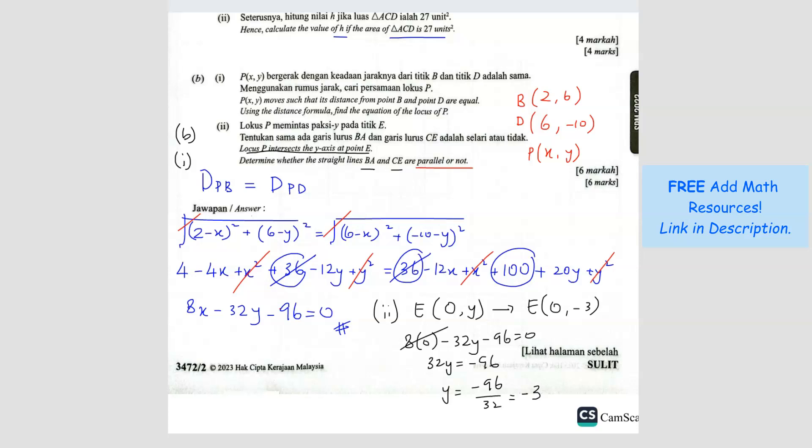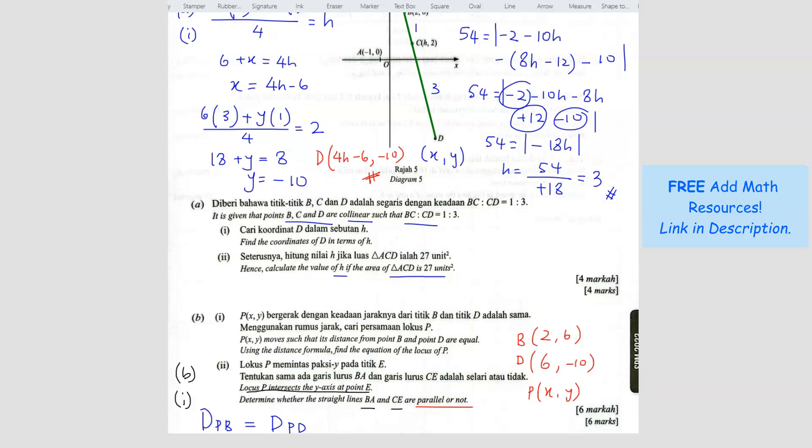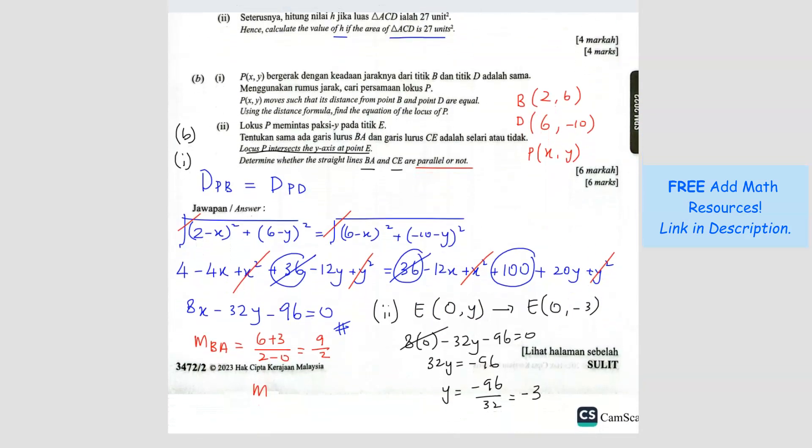Since we are looking for whether it's parallel or not, that means we want to find the gradient. So the gradient, the first one is between B and A. So B and A, B is 2, 6. So Y2 minus Y1 over X2 minus X1. So 6 minus negative 3, so plus 3, divided by 2 minus 0. So you get 6 plus 3, 9, 9 divided by 2. So it's 9 over 2. The second one, gradient of CE. C is H, 2. H is 3, so C is 3, 2. So the gradient of CE will be 2 minus negative 3, so plus 3, divided by 3 minus 0. So you get 5 over 3. So both of them are not identical. So they are not equal, so not parallel.